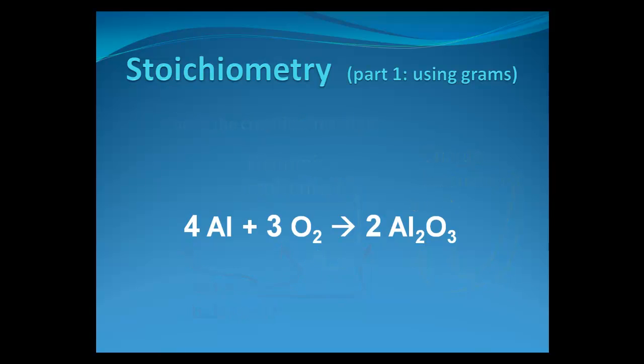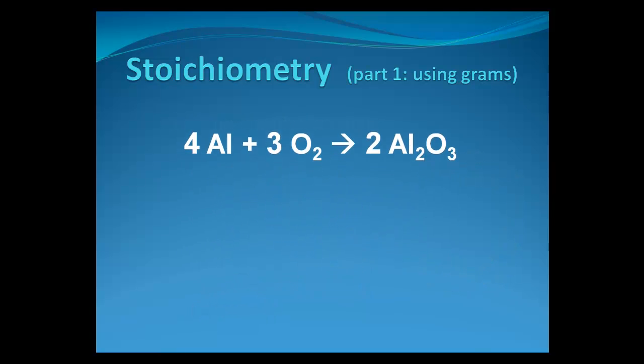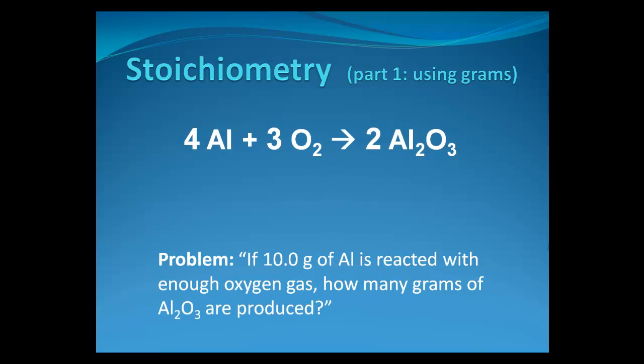So now that we've got the chemical reaction, let's do something with it. Let's do some stoichiometry. Here's a stoichiometry problem that might be typical in the class. If we have 10 grams of aluminum and we react it with enough oxygen gas, how many grams of aluminum oxide are produced? Let's take the pieces of the numbers out of this problem and put it next to the reaction. 10 grams of aluminum and how many grams of aluminum oxide.